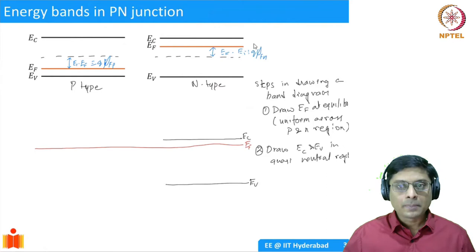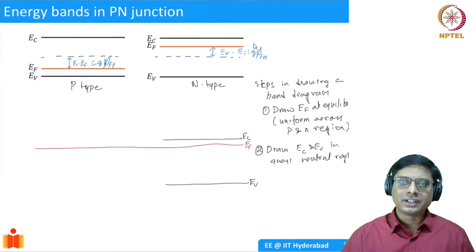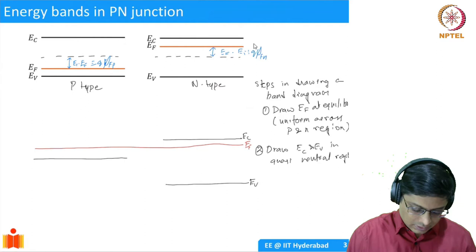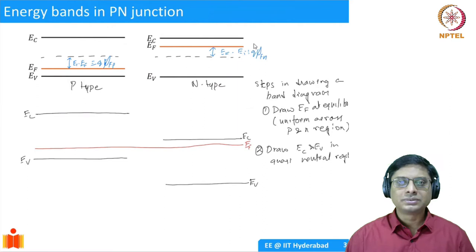Similarly for the p-type semiconductor, the Fermi level has to be close to the valence band, so I draw Ev and then Ec above it. This is how the equilibrium band should look in the quasi-neutral regions. Now, what happens in the depletion region?